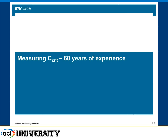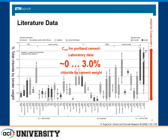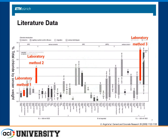Measuring the critical chloride content has been a question since the middle of the last century. A graph from a 2009 literature review collects all different authors' studies, plotting total chloride by binder weight believed to be the threshold value. There is a huge scatter. For laboratory studies on Portland cement, corrosion started at almost zero chlorides in some studies, while in others it didn't even start at 3% chloride by cement weight. Field studies show reduced scatter, but it still spans a huge range.